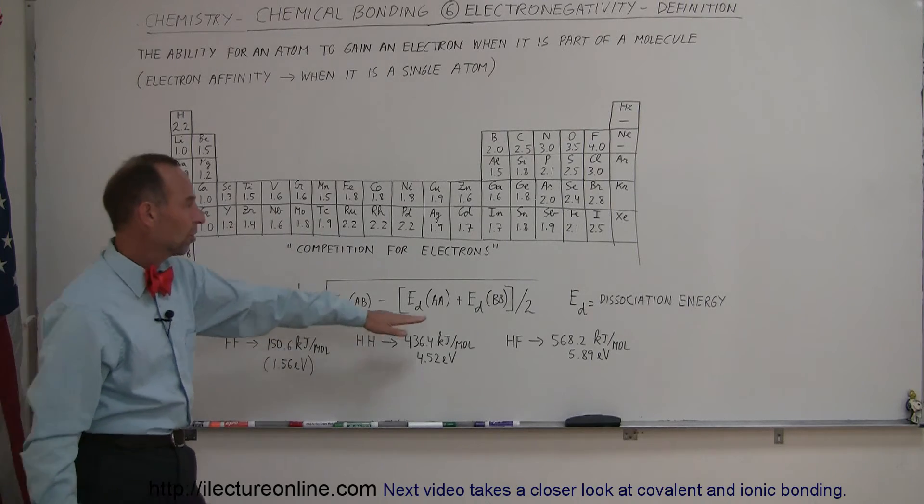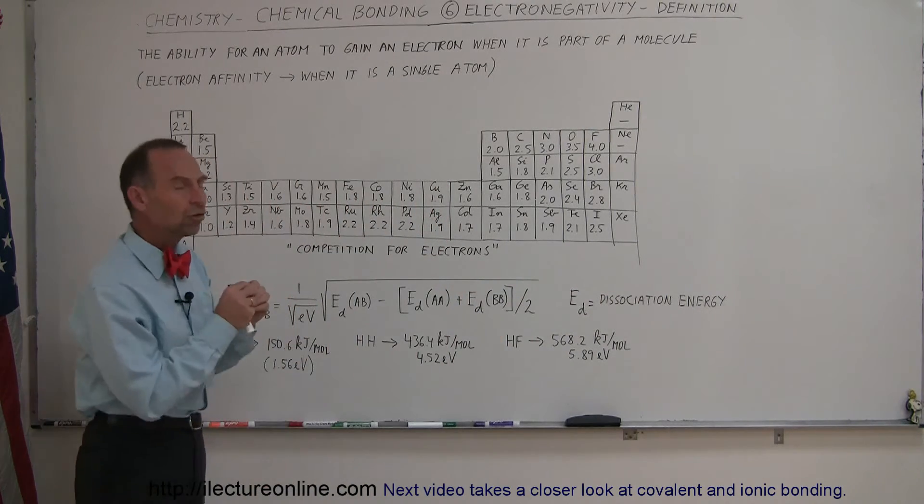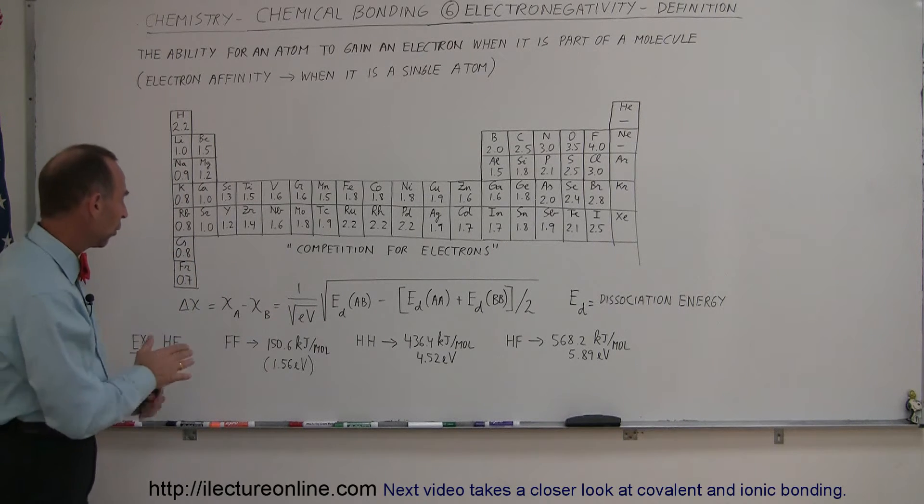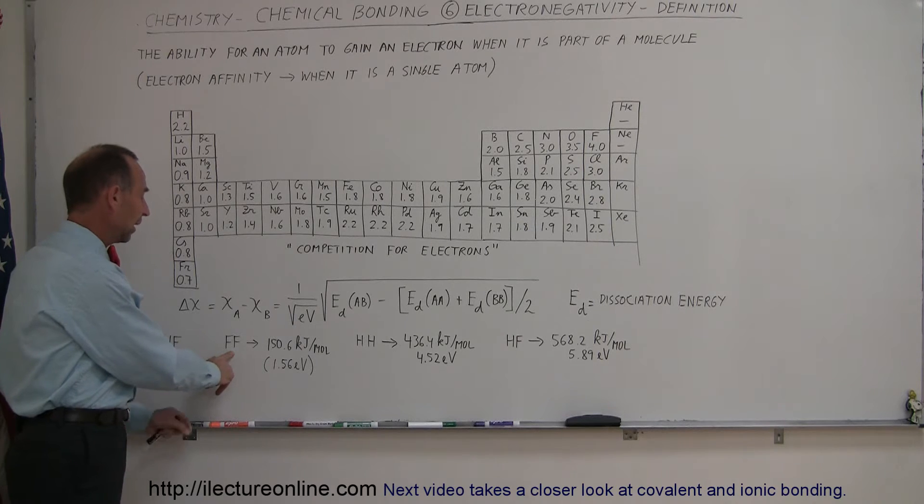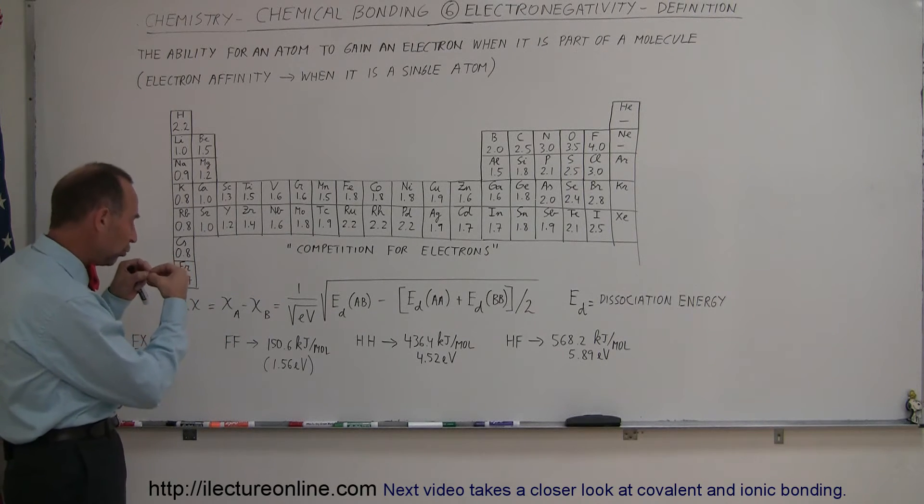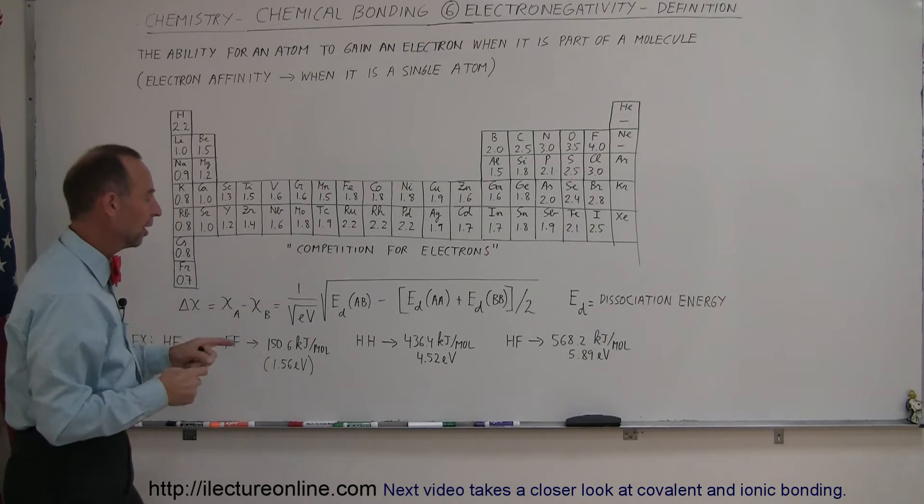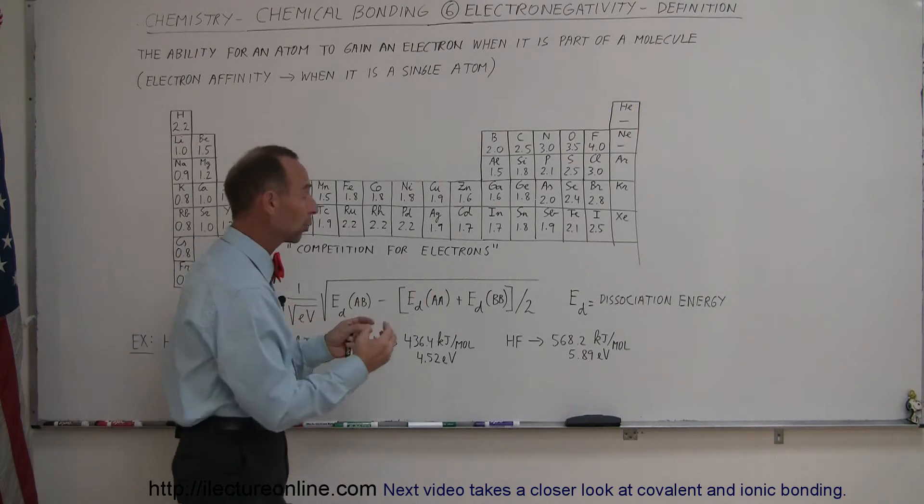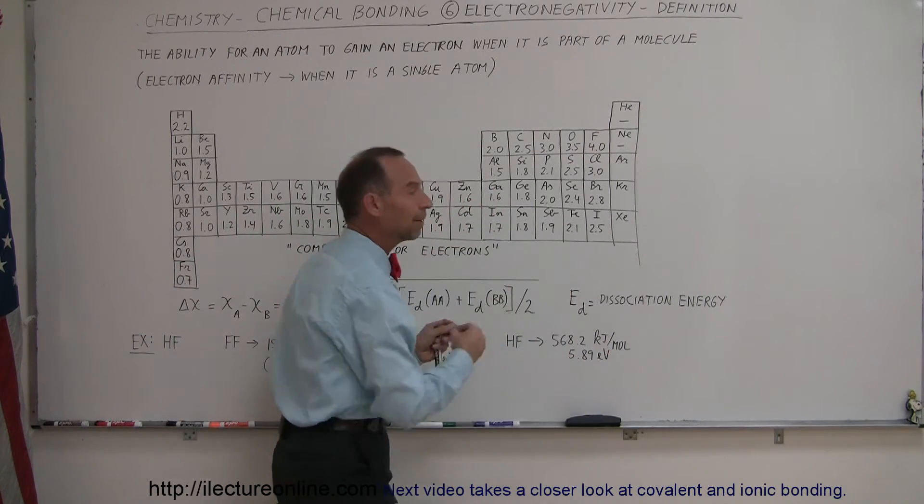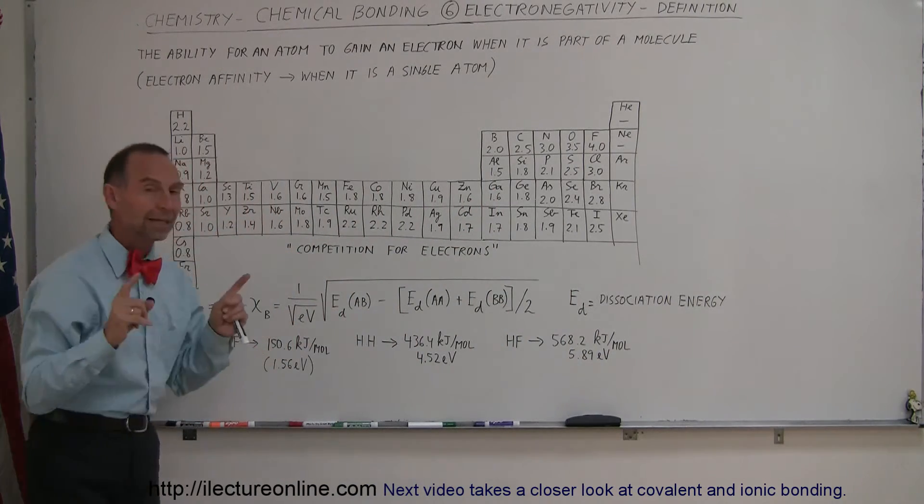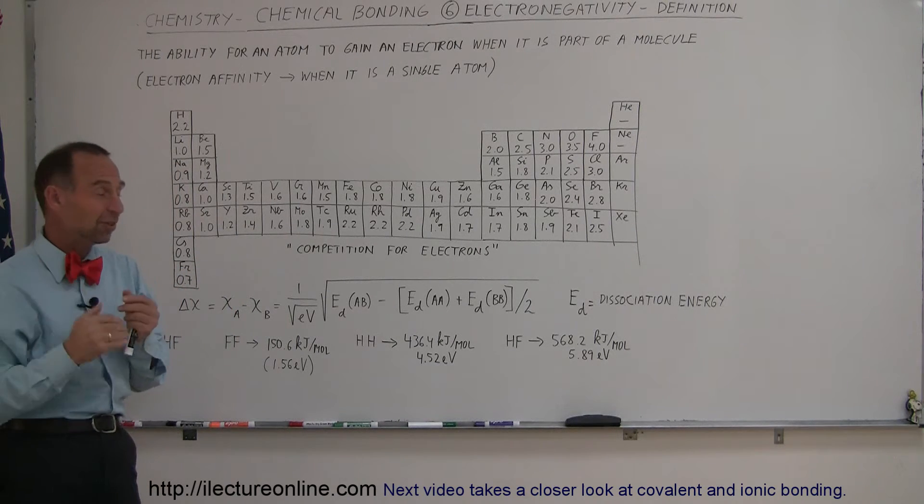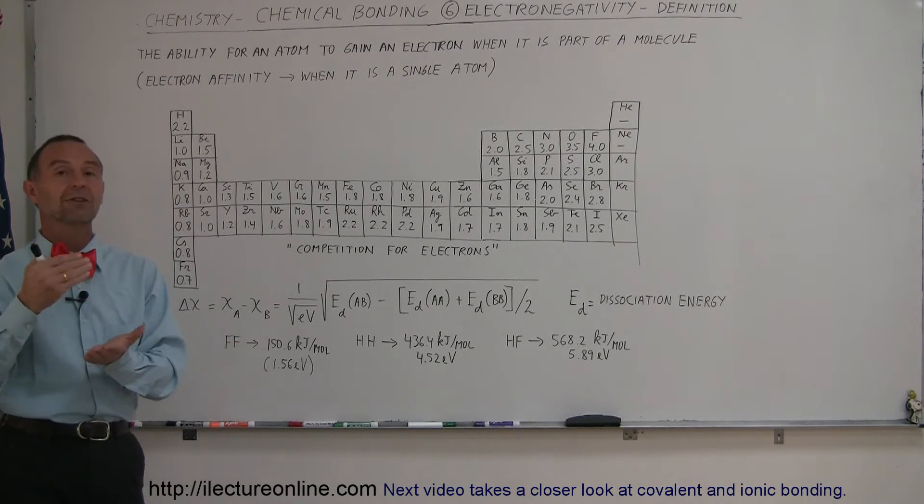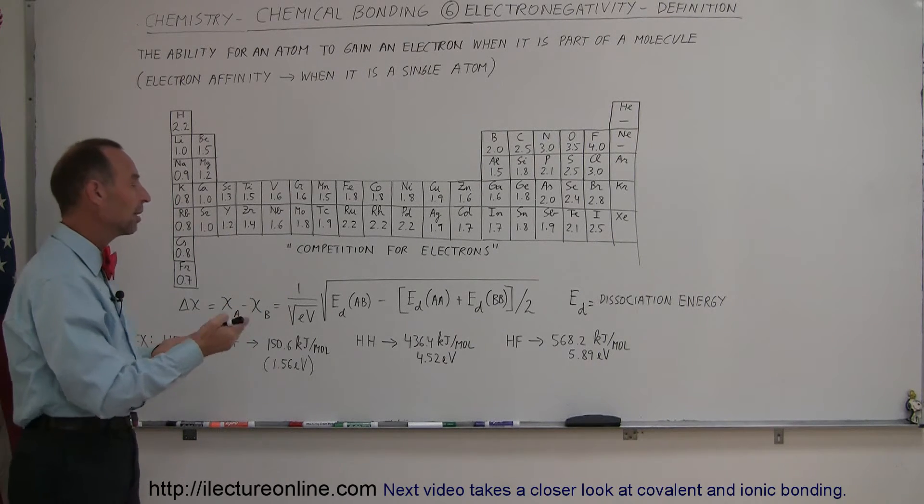So we take what we call the dissociation energy of each of the two atoms when it's bonded to another atom of its same kind. For example, what is the dissociation energy? How much work does it take to pull two fluorine atoms apart from one another? How much work does it take to pull two hydrogen atoms apart from one another? And then finally, how much work does it take to pull a hydrogen away from a fluorine atom? And by doing that, we can actually calculate a number that is a reasonable representation of the difference between the electronegativity of hydrogen and the electronegativity of fluorine.